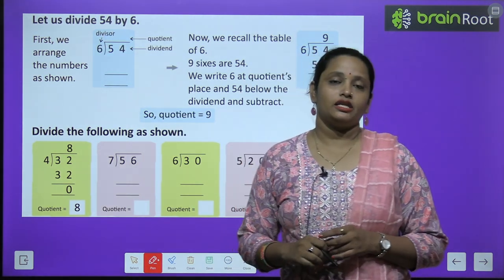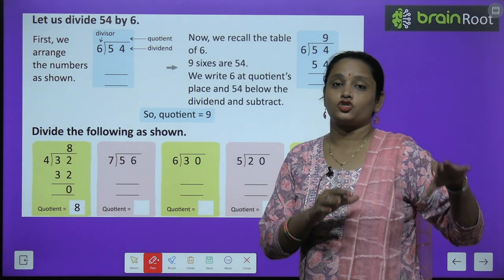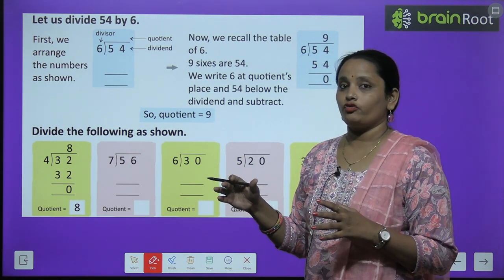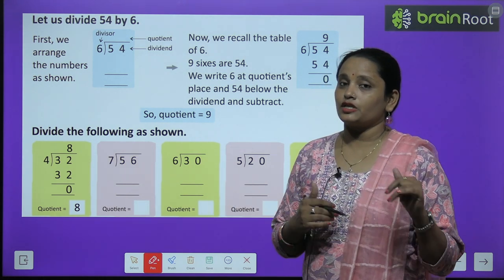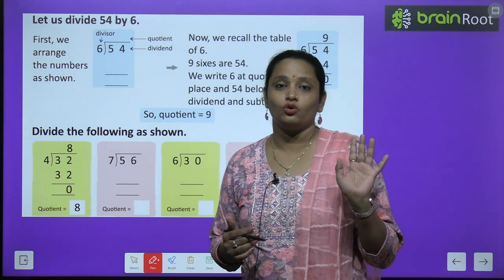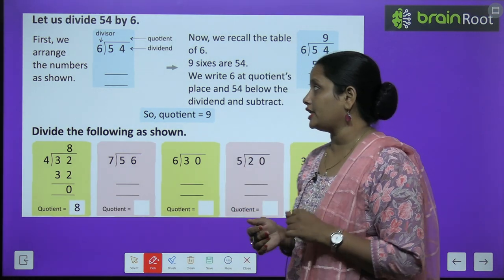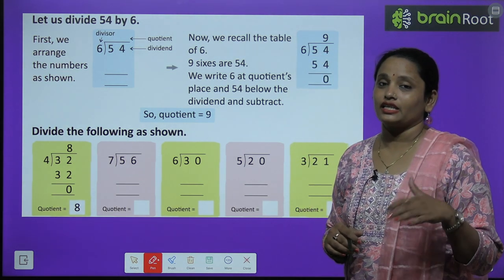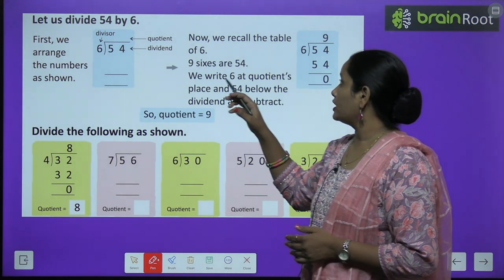Here you can see a number is given — number 54 — which we have to divide among 6 children. So 54 toffees have been given. Your teacher, ma'am, has said to give all these toffees to 6 children, but everyone must get an equal share. So division means dividing things equally, distributing them.